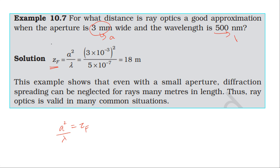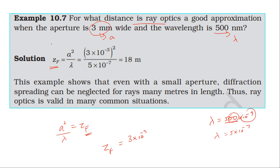The wavelength lambda is 500 nanometer, which is 500 into 10 power minus 9, that is 5 into 10 power minus 7 meter. The aperture a is 3 millimeter, which is 10 power minus 3 meter. So a squared divided by lambda: 3 millimeter squared divided by 5 into 10 power minus 7.